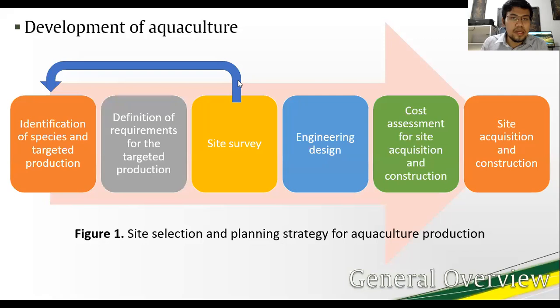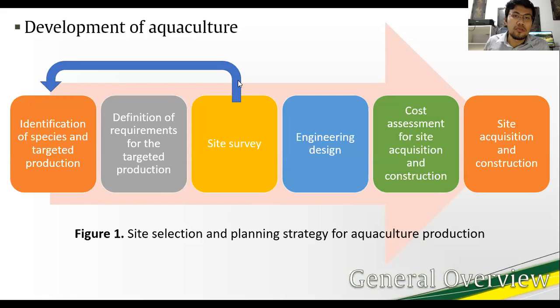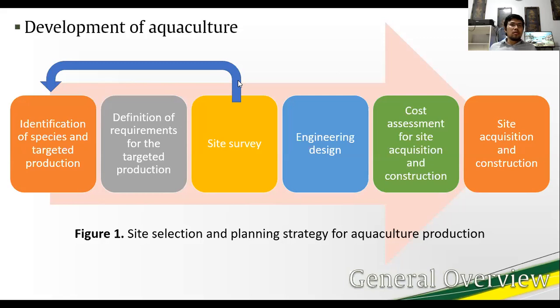Here is the schematic of the development of an aquaculture farm or setup. It should begin with the species selection and target production. Then the requirements for the targeted production should be laid out. Once requirements are set, the site location should be surveyed, after which engineering design should commence. The design should include provisions for improving defective factors identified during the site survey. Economic considerations for site acquisition and development should be outlined prior to actual site acquisition and construction. If land is previously owned, thereby limiting the production or species choice, the actual site loops back to the first step to factor in those limitations.